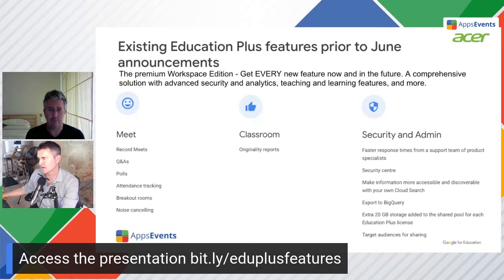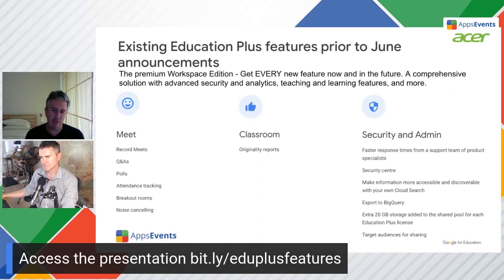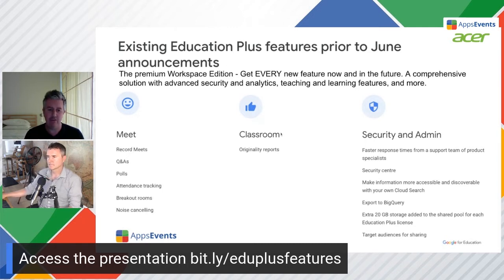On to Google Classroom. We're going to get to the new super cool Classroom features, but originally it was just originality reports that came to Classroom. Remember the free feature set — Fundamentals, the free one — you do actually get three originality reports. But on the Education Plus side, you're getting unlimited reports. And then a feature coming in the future will be the ability to upload student documents to a school's own repository.